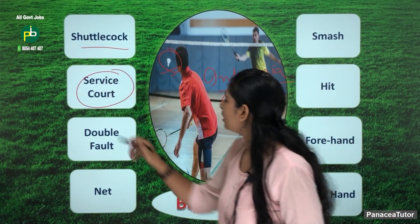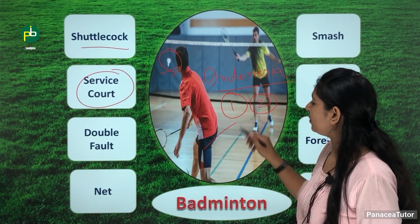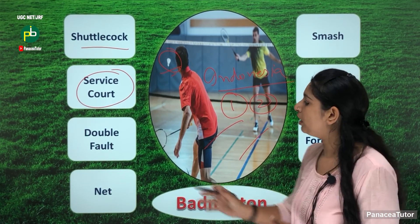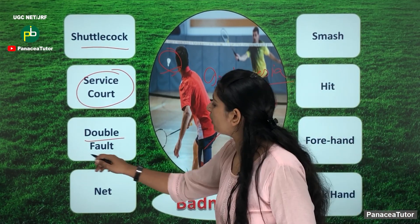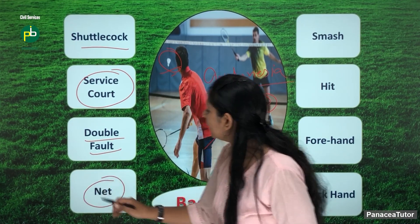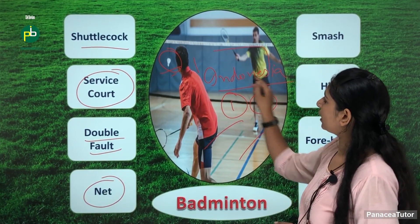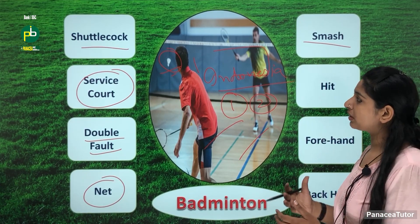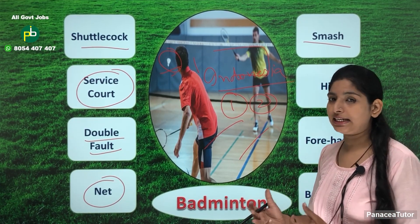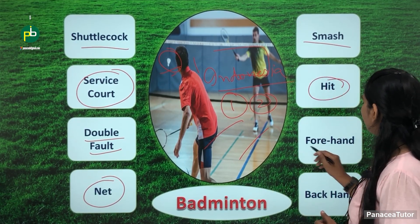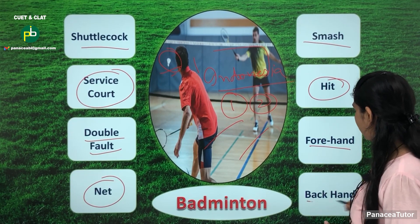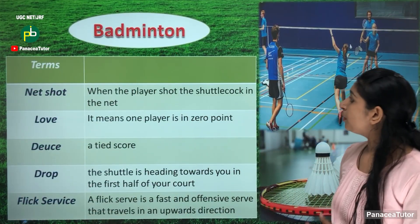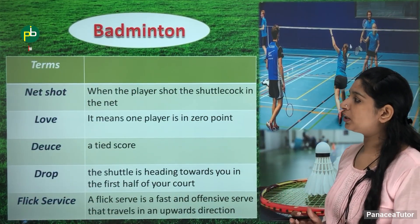Next is service court — the area where the badminton game is played is known as service court. Next is double fault. Net — that is the net. Next term is smash — smash means hitting the shuttlecock hard. Forehand and backhand are positions of service.